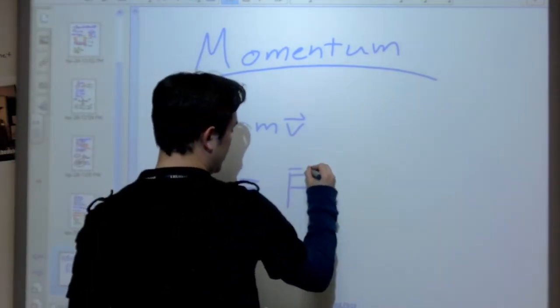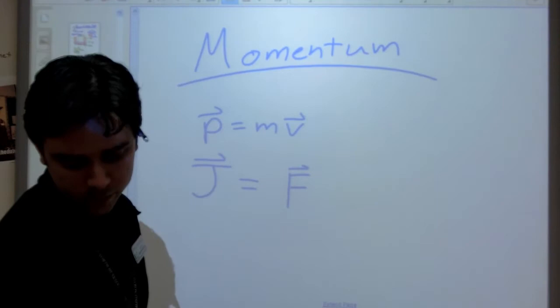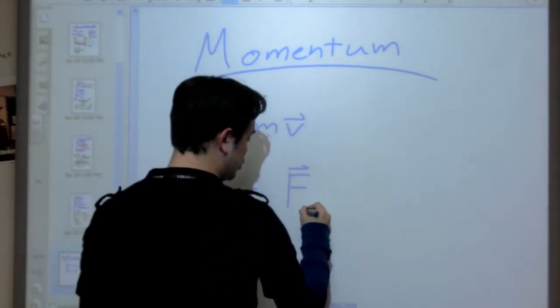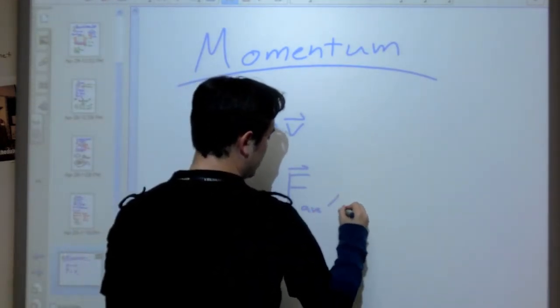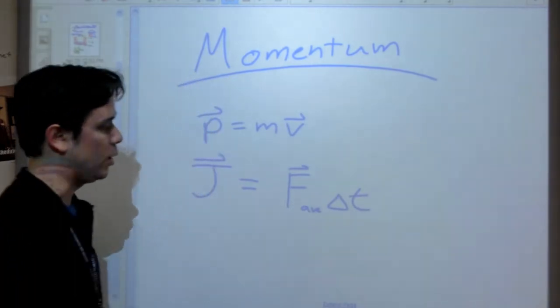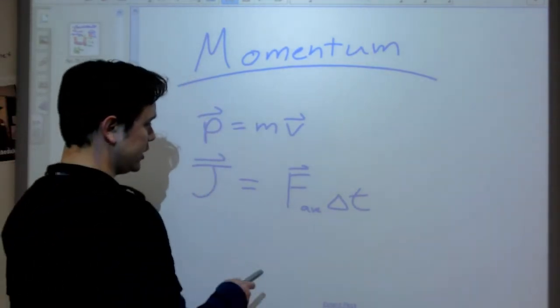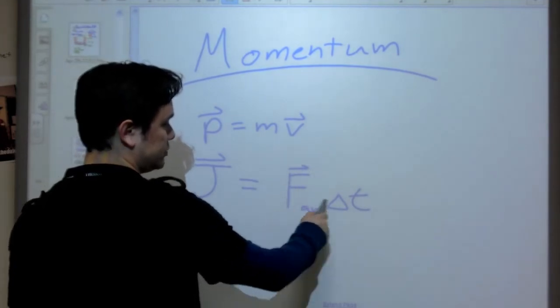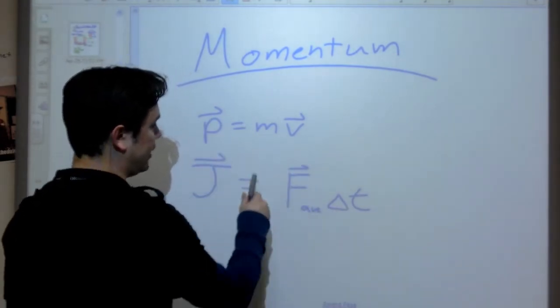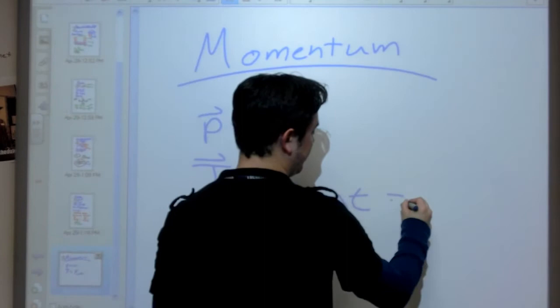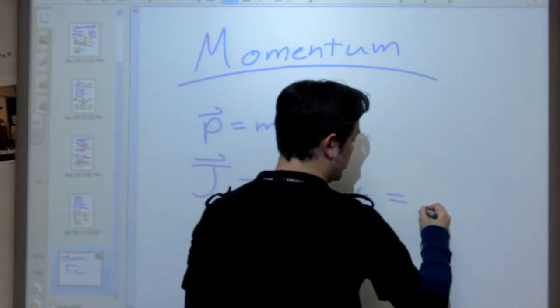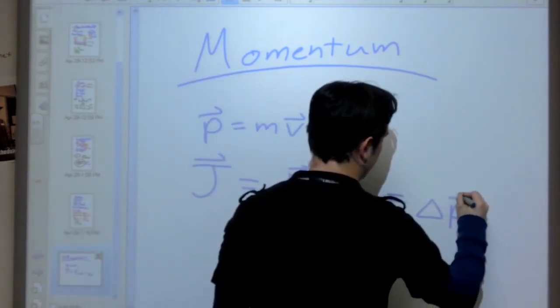It is equal to, at least for the non-calc-based physics, we've got our force, our average force to be precise, times however long that force is applied onto it. Now this is an important concept because it allows you to deal with forces being applied over time and how they affect your momentum. In fact, we'll find that the impulse is also equal to our change in momentum.